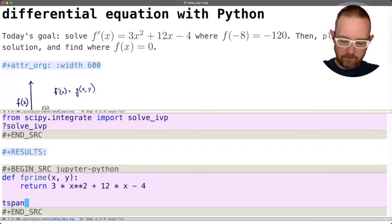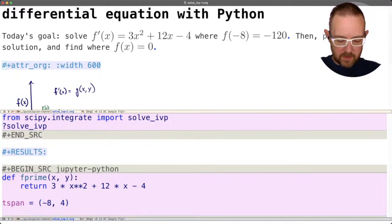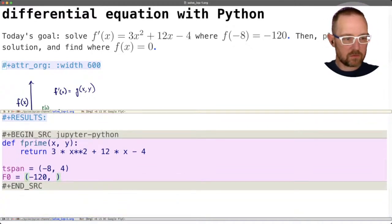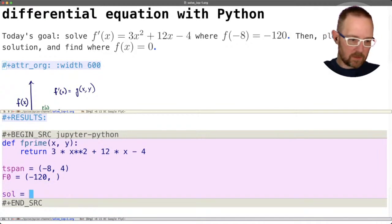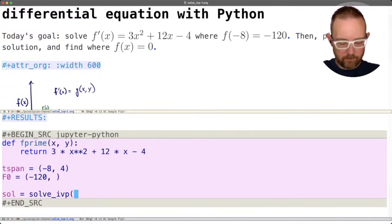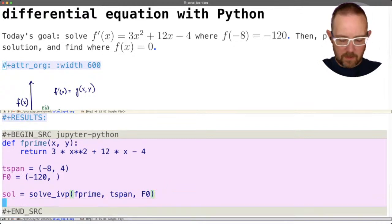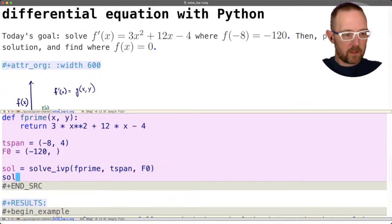All right, and then let's say t span, this is going to be the initial time, which is minus 8 or initial x. And we have to pick a range to integrate over. I don't know what a good range is off the top of my head yet, so we'll pick 4 for starting. And then let's say, let's call it f zero. That's going to be the initial condition at minus 8, and that's equal to minus 120. And so we make this just this single tuple. And then we make a solution equals solve IVP. So we're going to save the output of solve IVP in the variable SOL. So we have to give this f prime, and then t span, and then f zero.